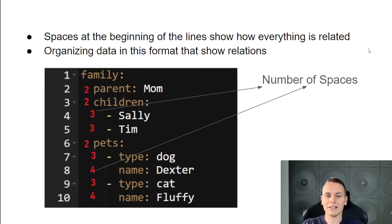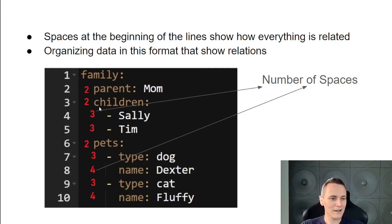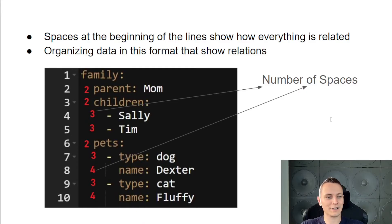Spaces at the beginning of lines show how everything is related. If you look at our family object, the parent, children, and pets all belong to a family. Everything below 'children' is a child, and everything below 'pet' is information about a pet. This structure allows you to organize information in a way that shows relationships between different pieces of data.